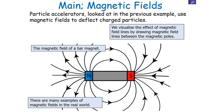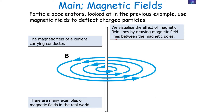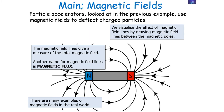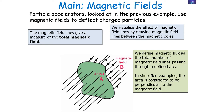Previously we've looked at the ideas of magnetic fields. We've visualised the effect of magnetic fields by drawing magnetic field lines between magnetic poles. You can have a bar magnet, a current-carrying wire — there are lots of different examples of magnetic fields which you can draw. The magnetic field lines give you a measure of the total magnetic field, and another name for magnetic field lines is magnetic flux. The magnetic field lines give you a measure of the total magnetic field, and we define magnetic flux as the total number of field lines passing through a defined area.